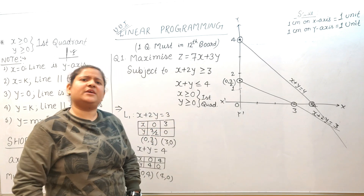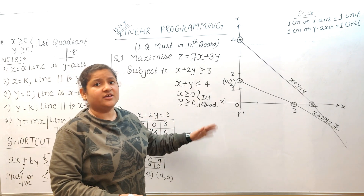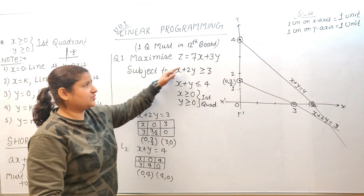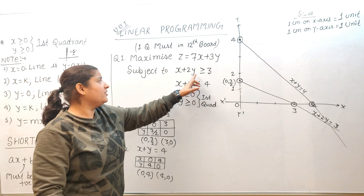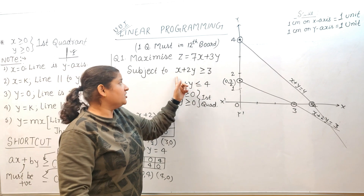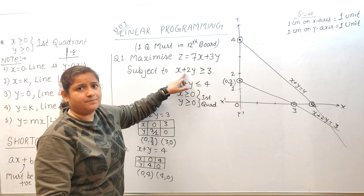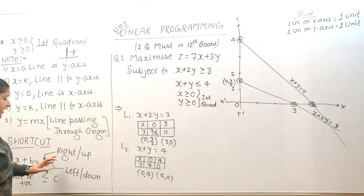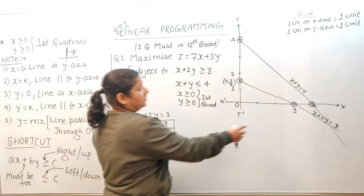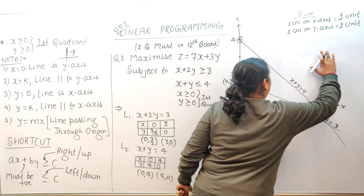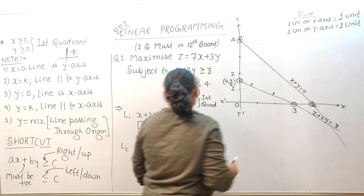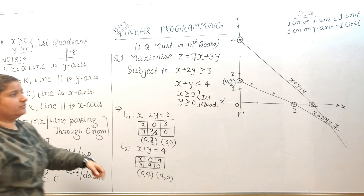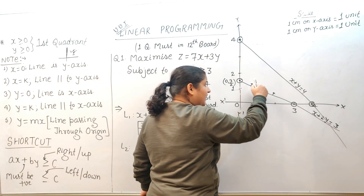The graph work you already learned in Class 10. Now let's learn the main work — the shaded portion — using the shortcut. I ask myself: does the shortcut apply here? For the first constraint: coefficient of x is positive, coefficient of y is positive, constant is positive — all three positive, and the middle sign is positive. Shortcut is applicable! Since the sign is greater (≥), the shaded portion is to the right and upward. For the second constraint, the symbol is less (≤), so the shaded portion is to the left or downward of that line.